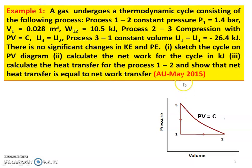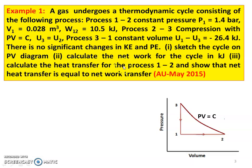First problem, example number 1 from May 2015 question paper. A gas undergoes a thermodynamic cycle consisting of the following processes. Process 1 to 2: constant pressure process, P1 equal to 1.4 bar, V1 equal to 0.028 meter cube, work done W1 equal to 10.5 kilojoules. Process 2 to 3: compression with PV equal to constant, U2 equal to U3. Process 3 to 1: constant volume process, U1 minus U3 equal to minus 26.4 kilojoules. There is no significant change in kinetic energy and potential energy.